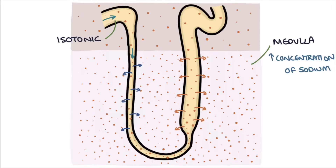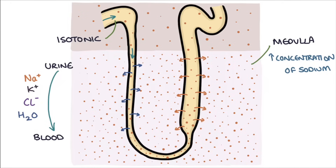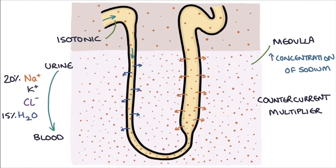The overall effect of the loop of Henle is that sodium, potassium, chloride, and water are removed from the urine and reabsorbed into the blood. This complex system of secreting solutes from the thick ascending loop to draw water out of the thin descending loop is called the counter-current multiplier. The loop of Henle is responsible for reabsorbing about 20% of the filtered sodium and 15% of the filtered water out of the filtrate and back into the blood.